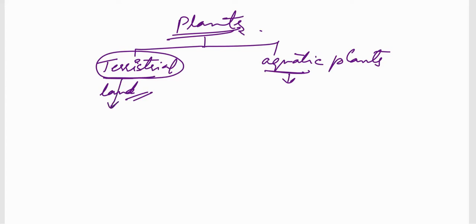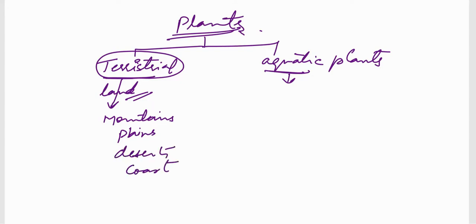Under terrestrial, plants are further divided based on where they grow: mountains and plains, plains, deserts, coastal areas, heavy rainfall areas — that is rainforests — and swampy areas, also called wetland areas. These are the topics you are going to deal with in your textbook under terrestrial plants.